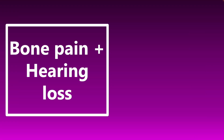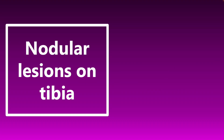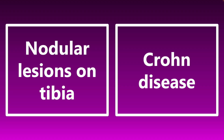If you see bone pain plus hearing loss, think Paget disease. Nodular lesions on the tibia — make an association with Crohn disease. These nodular lesions can also be called erythema nodosum, and they can appear during a flare-up of Crohn disease. Make sure you know that association.